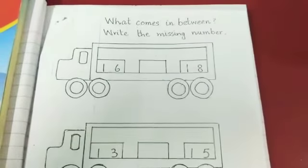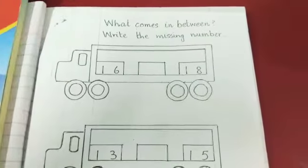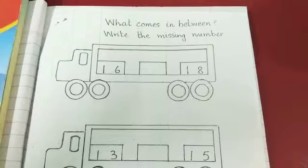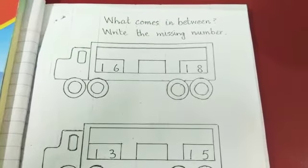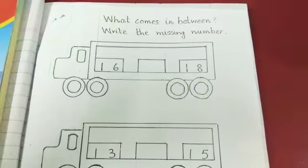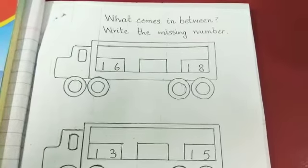You know the sequence of the numbers? Eleven, twelve, thirteen, fourteen, fifteen, sixteen, seventeen, eighteen, nineteen, twenty.